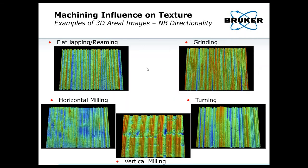Here are just a few examples of 3D aerial images meant to show the difference between different methods of machining. These are all 3D white light interference microscope images coded in a color map where red is high and blue is low. You can see a pretty wide range of influences on the surface from whether it be turning, milling, flat lapping, or grinding. The spatial texture and the appearance and nature of the surfaces are fundamentally changed by those machining methods — something to keep in mind as we go forward and discuss the case study.